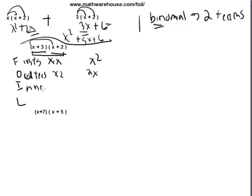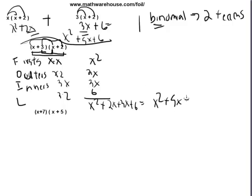I'll write that as 2x. I stands for the inners, which is the 3 and the x. And the lasts stands for the last in each pair here, 3 and 2. 3 times 2, which is 6. Now we're going to add all these up. It's x squared plus 2x plus 3x plus 6, and if you remember from up above, that becomes x squared plus 5x plus 6.